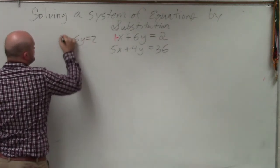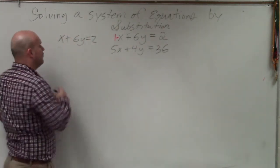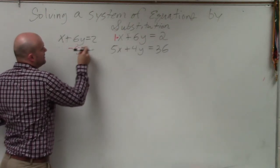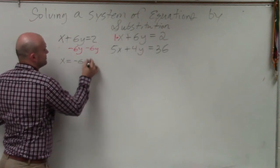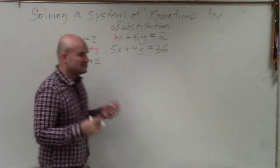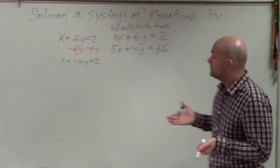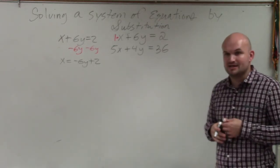Now, why am I choosing the variable that has a coefficient of 1 or negative 1 rather than any other variable? Well, the reason why, ladies and gentlemen, is because of inverse operations. When I solve for x, all I have to do is subtract the 6y on both sides.